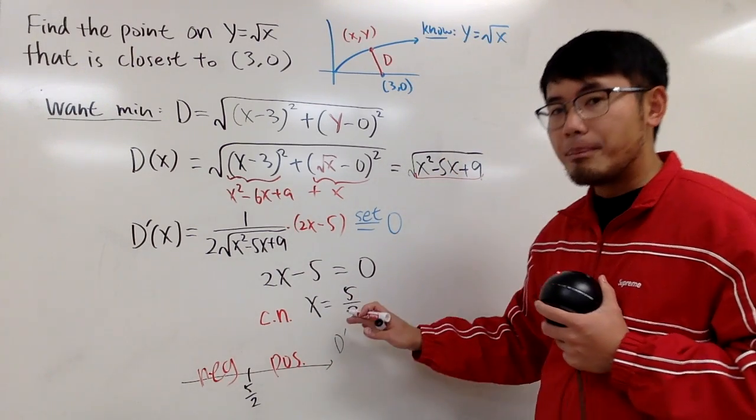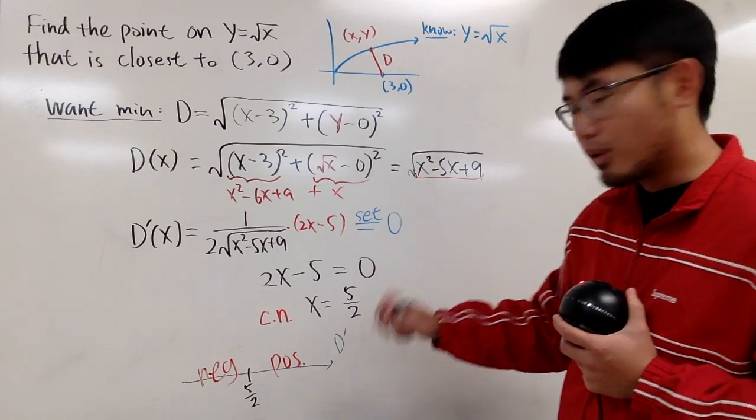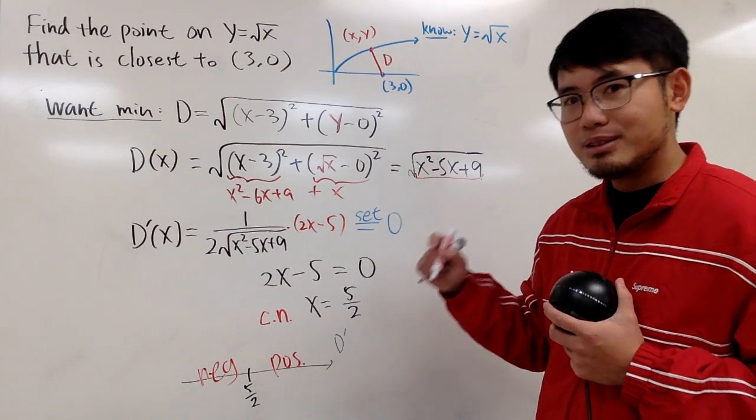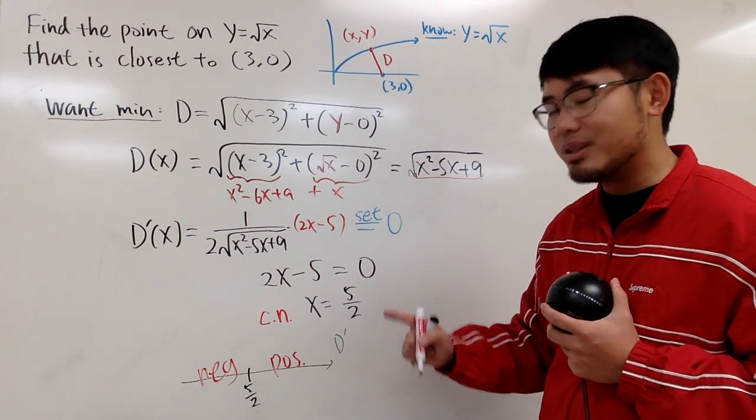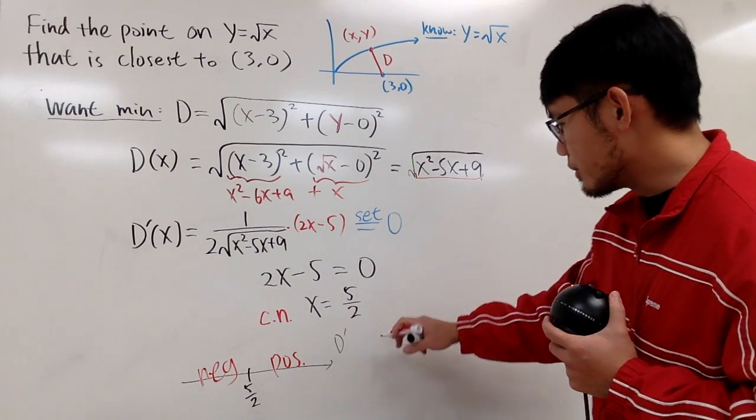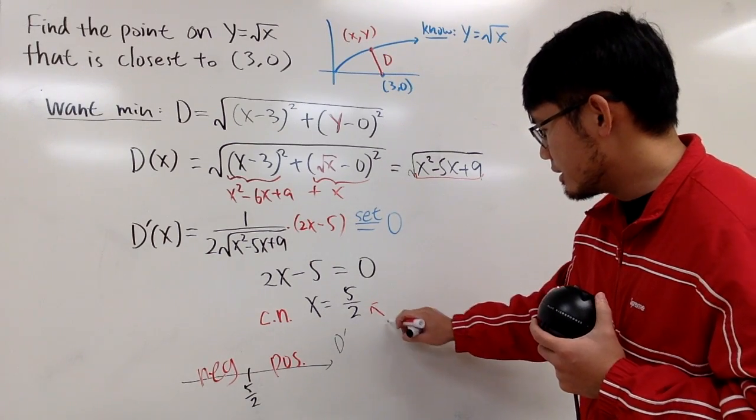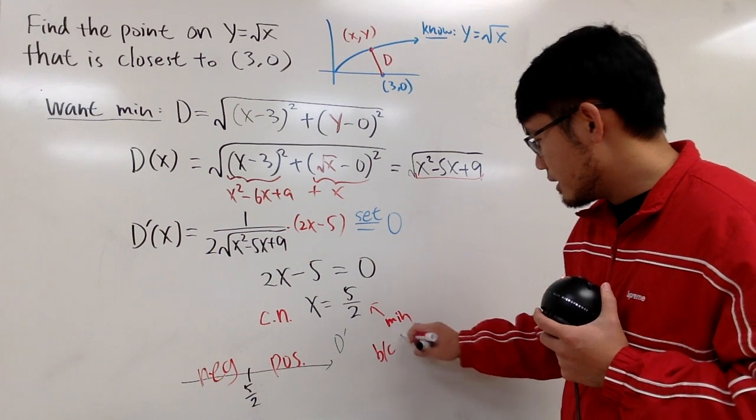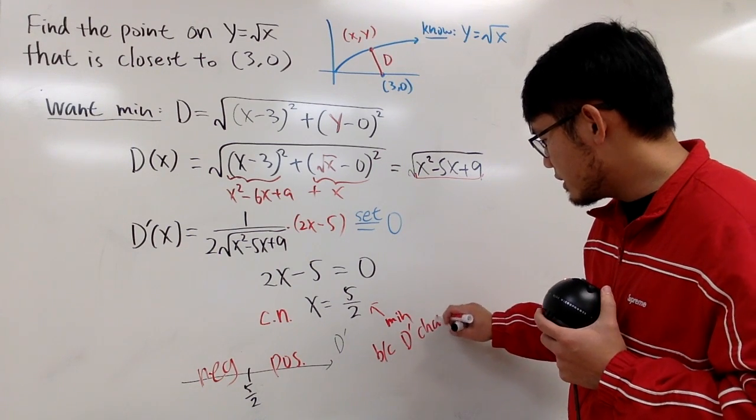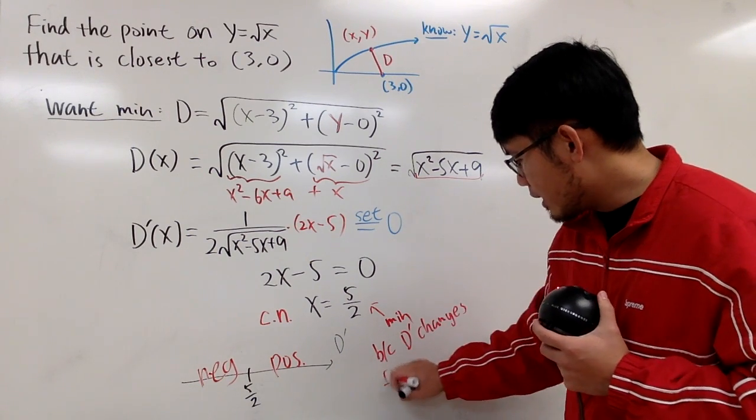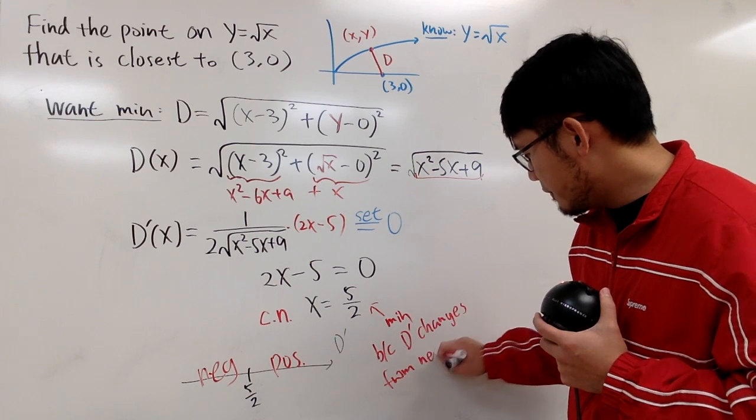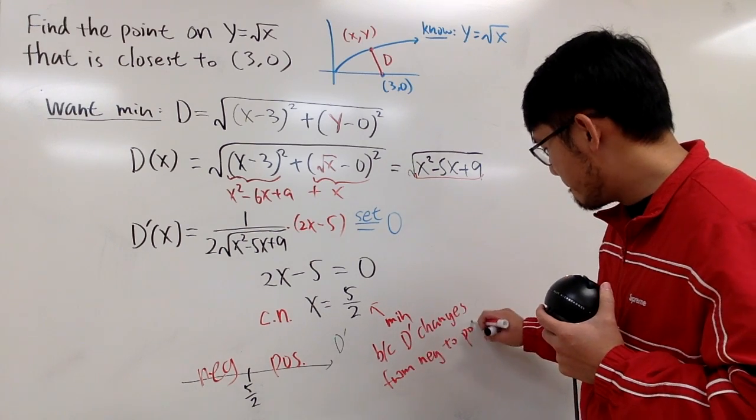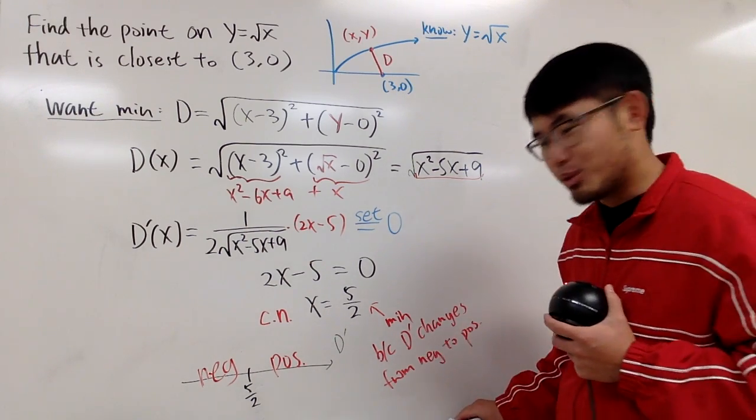So this critical number has to be local minimum. In fact, this is the only minimum. In fact, it's also the absolute minimum. So I'll just say, this is the minimum. Because d prime changes from negative to positive. That's the first derivative test.